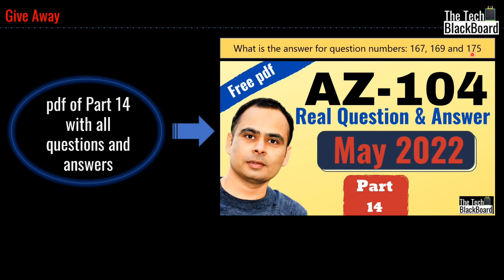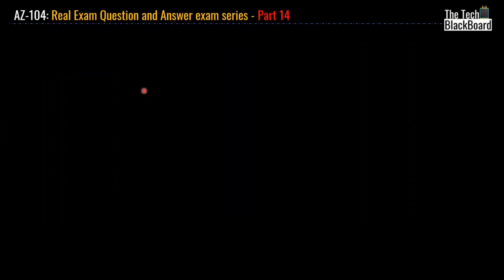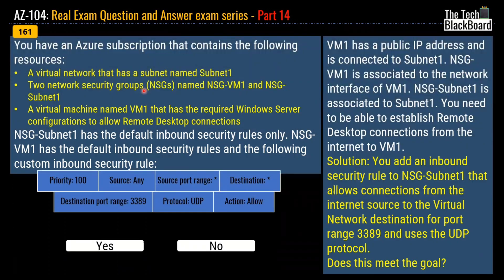So let's start part 14 with a scenario-based question. Question number 161 says that you have an Azure subscription that contains a virtual network with a subnet named subnet 1, two network security groups named NSG VM1 and NSG subnet 1, and a virtual machine named VM1 that has the required Windows Server configuration to allow remote desktop connection.